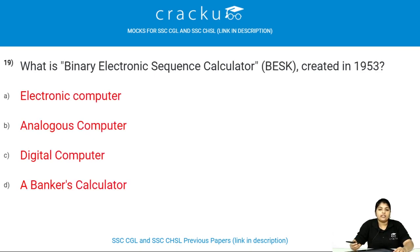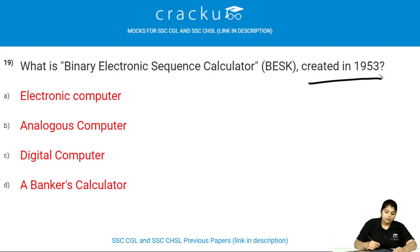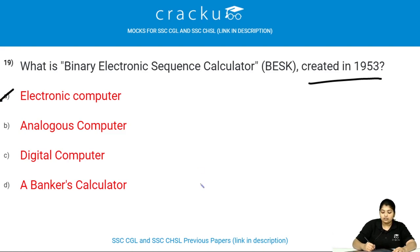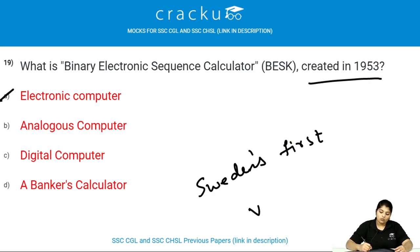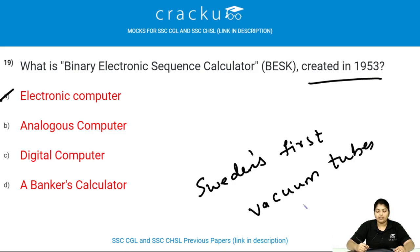What is the Binary Electronic Sequence Calculator (BESK), which was created in 1953? BESK is an electronic computer — it was Sweden's first electronic computer, made using vacuum tubes instead of relays.